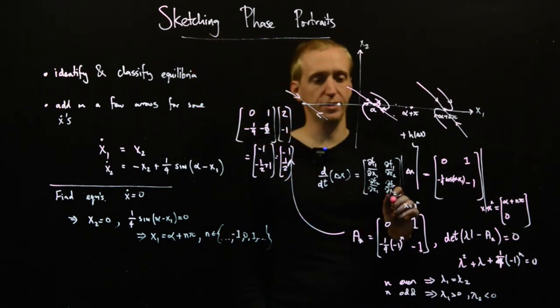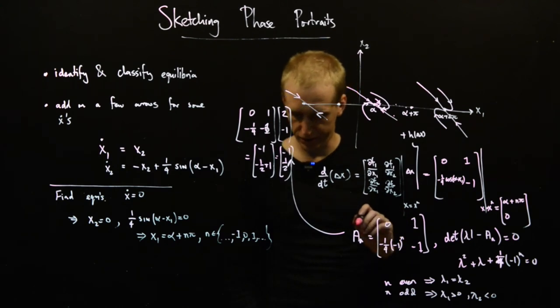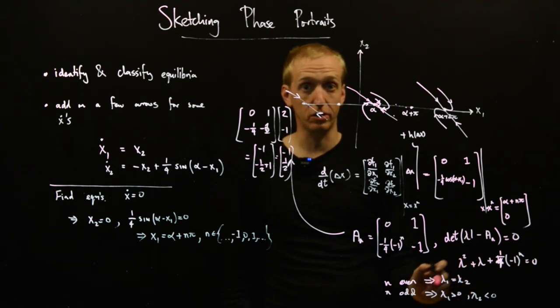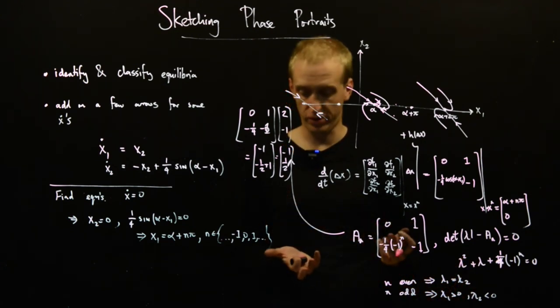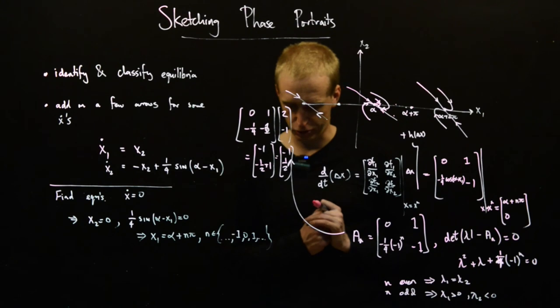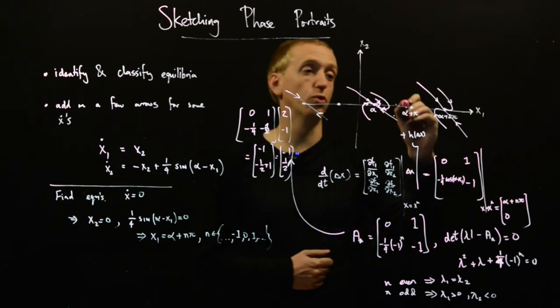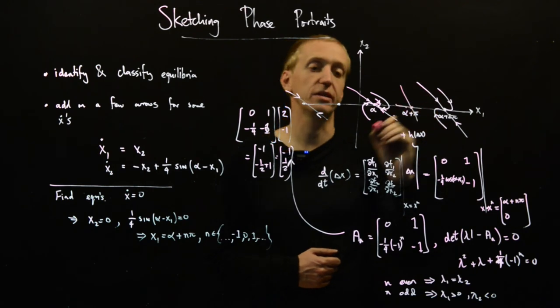And so what happens everywhere else? Well, we find here that we're in the saddle node case. And again, we can go away and find the eigenvectors to try and understand what the behavior looks like a little bit better. We would draw on our two eigenvectors, say something like that, and it's repeated here too.